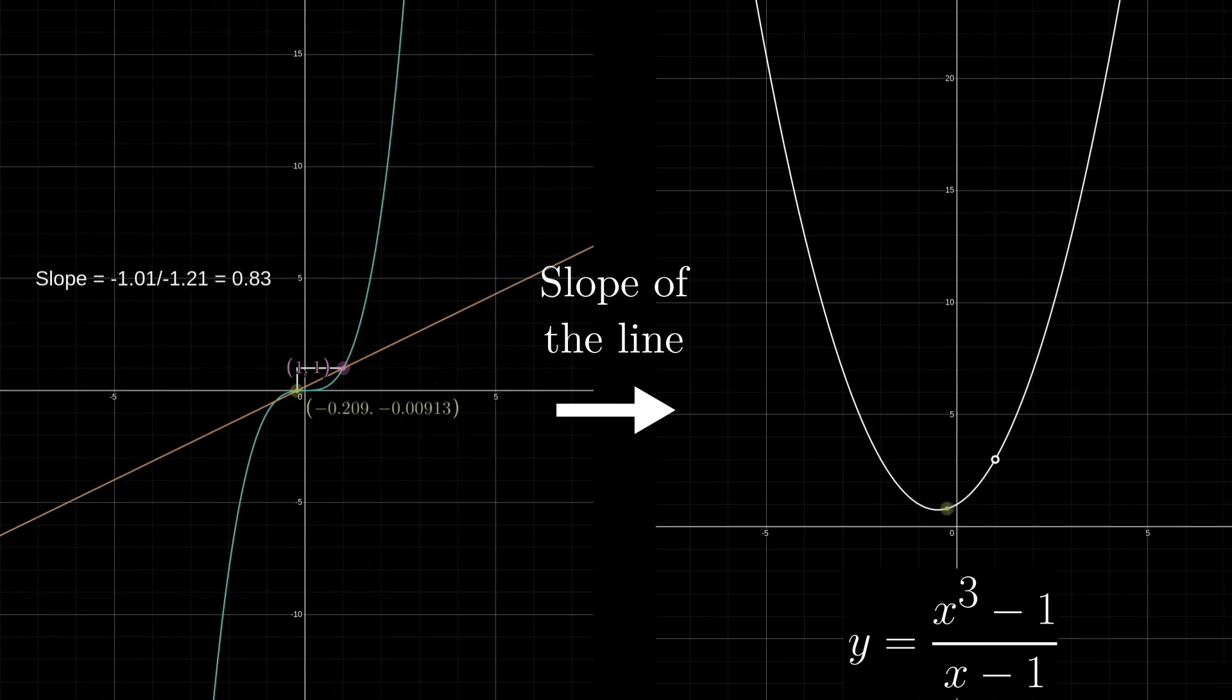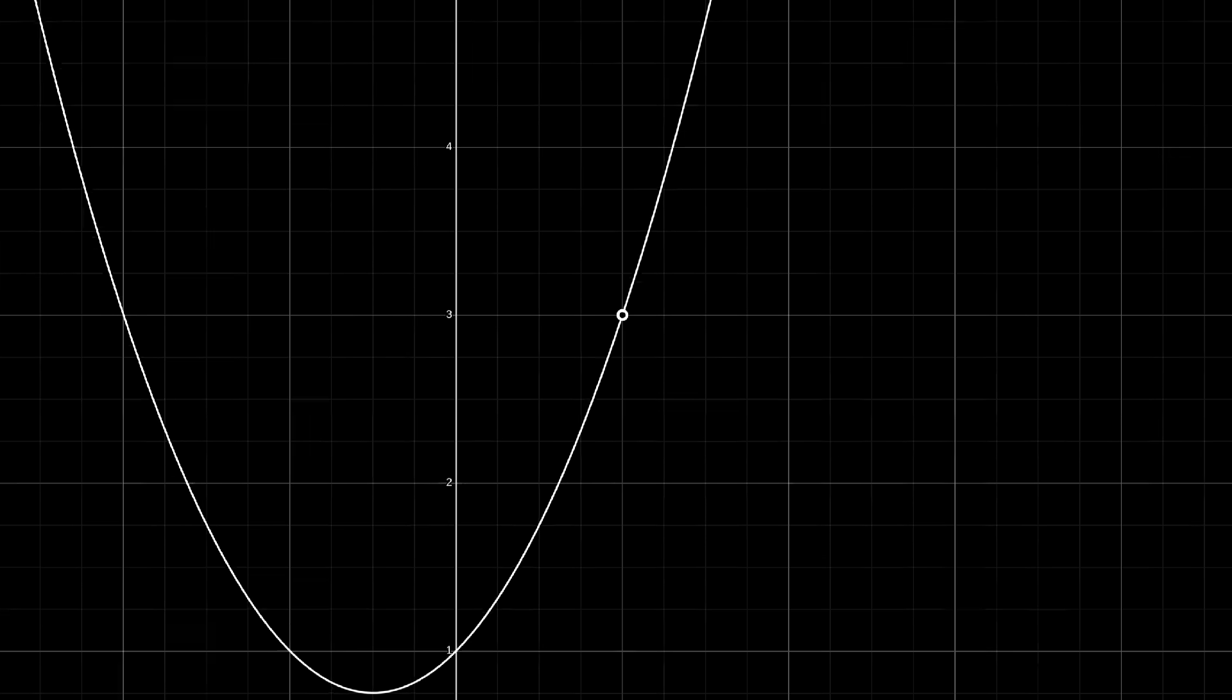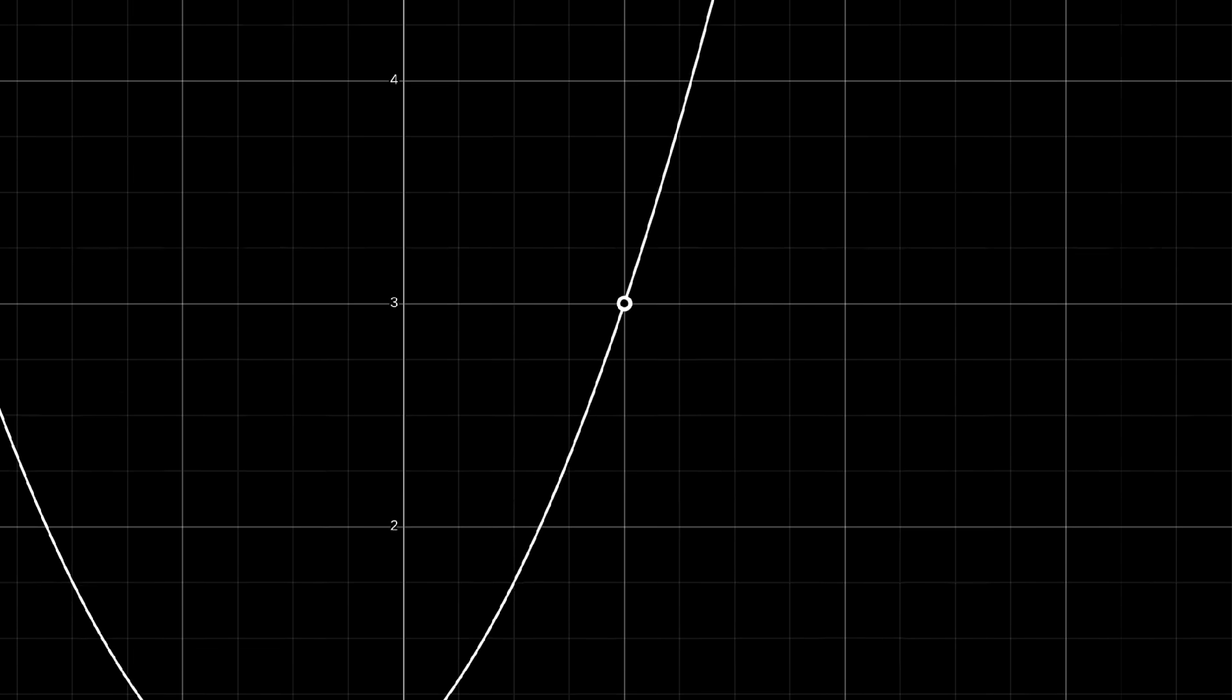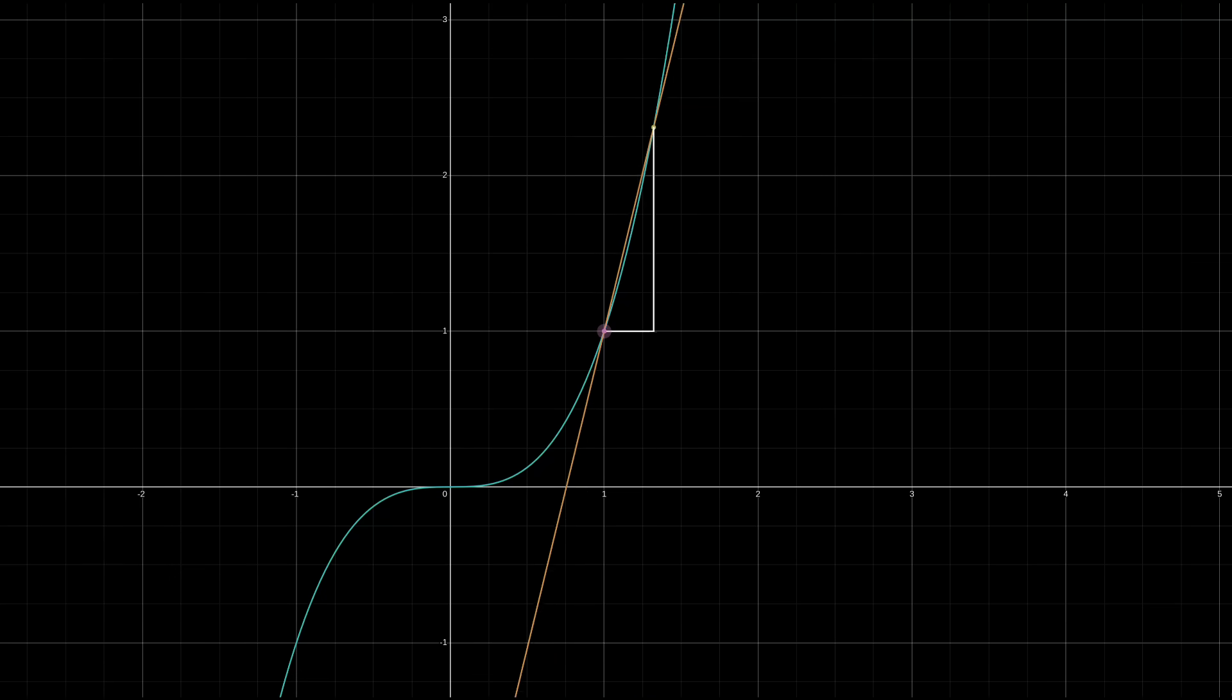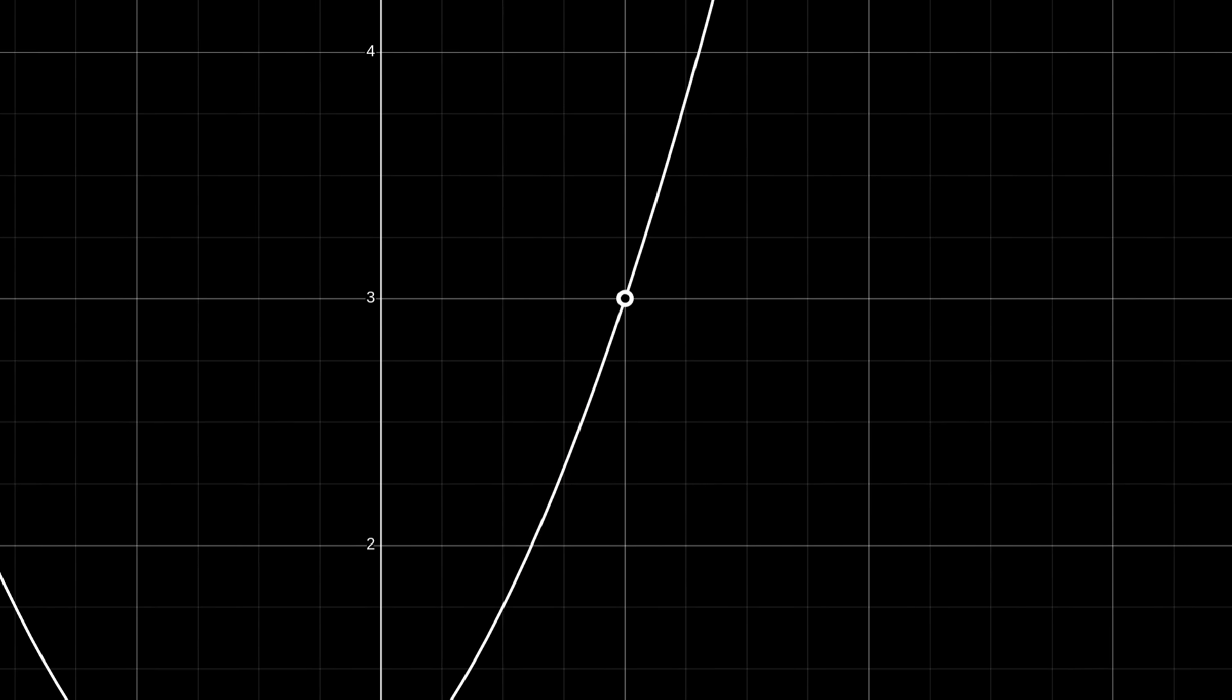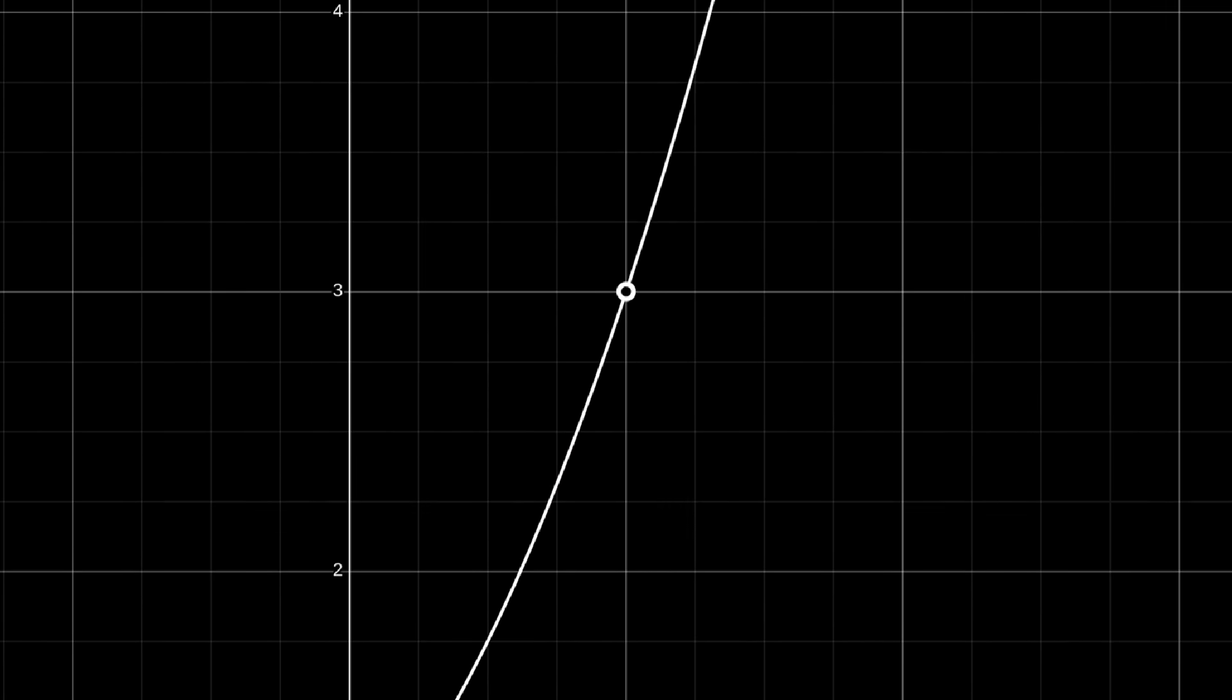And the derivative, the thing we really care about, would be the value of that function at x equals 1, since that would give us the slope between x equals 1 and itself, which is to say the slope right at x equals 1. But guess what? The slope function has a hole in it right there at x equals 1, the one value that we care about. And of course it does. That's the whole problem. That's where the points converge, leading to a division by zero and an undefined slope. But when we look at the graph, it sure looks like it's approaching a value at x equals 1. There's just a hole there.